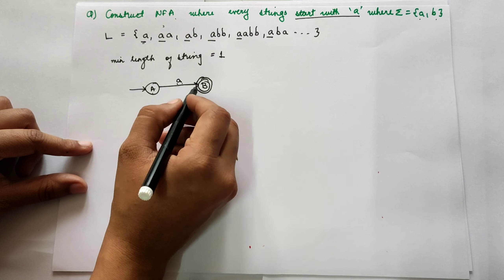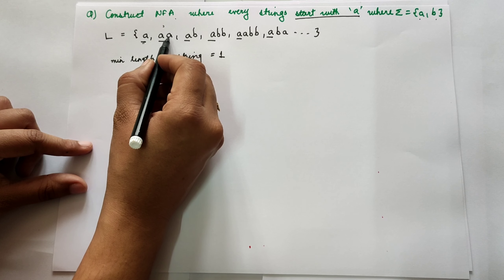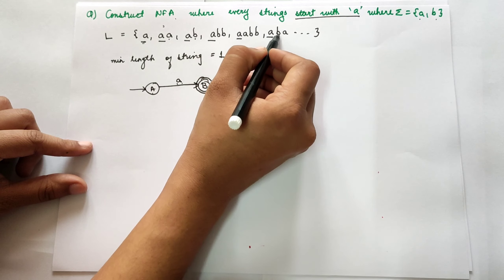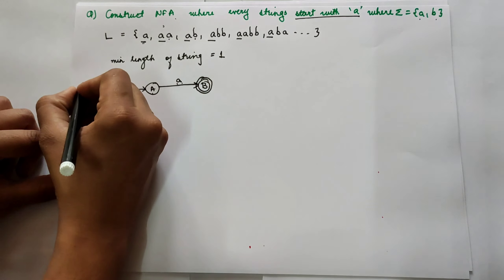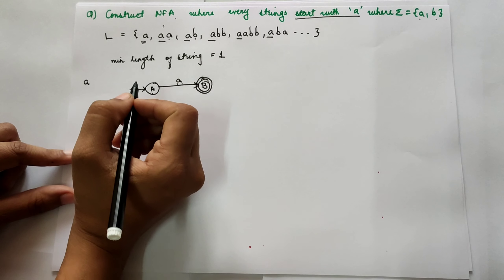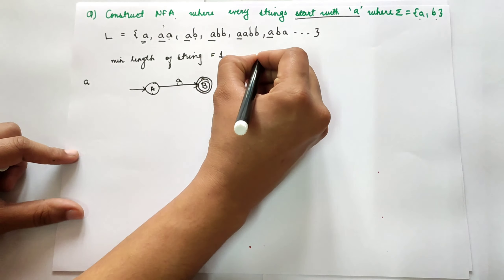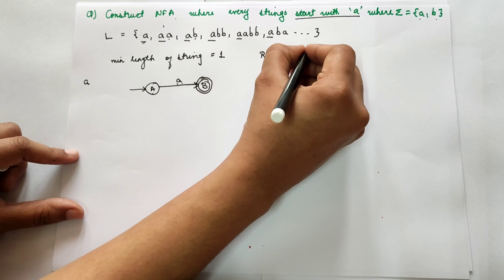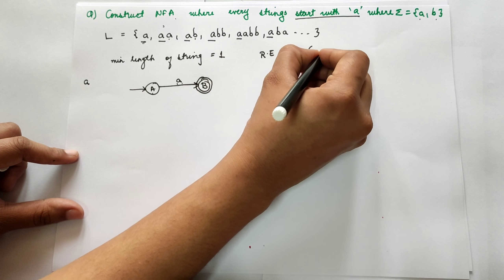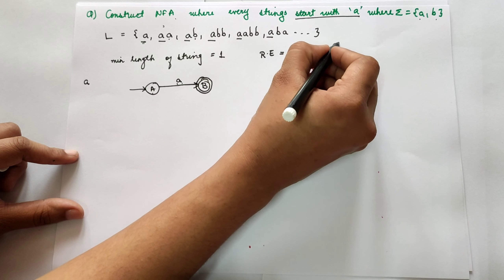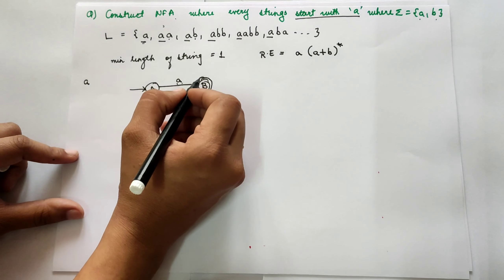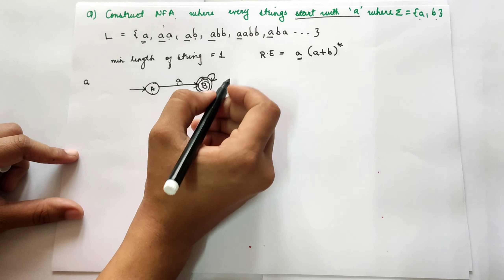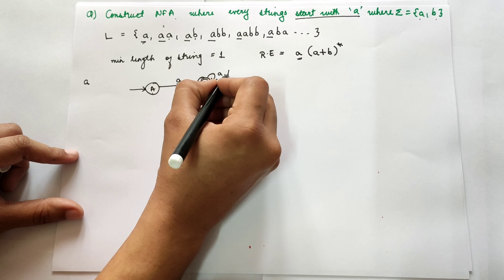Now after the initial A, there can be A, there can be B, double B, ABB — after A there can be any combination of A and B. So the regular expression for this language would be A followed by (A+B)* closure. I have taken the closure because after the first A there can be anything, so we take a self-loop or closure of A and B.